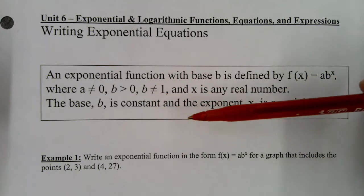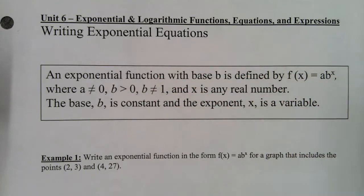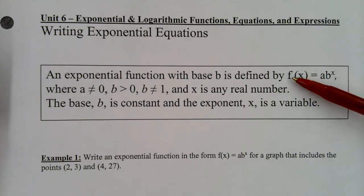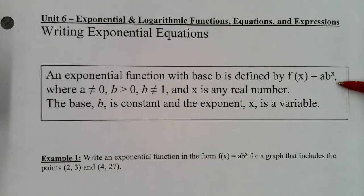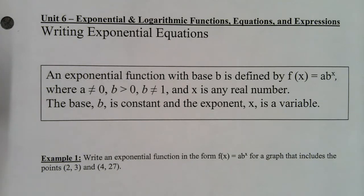Just to refresh your memory from yesterday, an exponential function with the base b is defined by this formula: f of x equals a times b to the x power, where a is not equal to zero, b is greater than zero, and b cannot be equal to one — because if b is one, you're raising one to a power, it just stays one. So b cannot be one, and x is any real number. The base b is constant, and the exponent x is a variable.